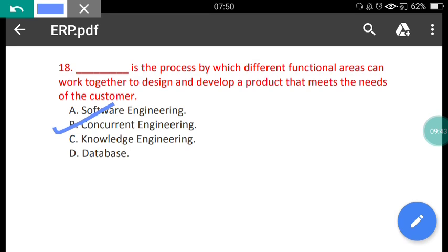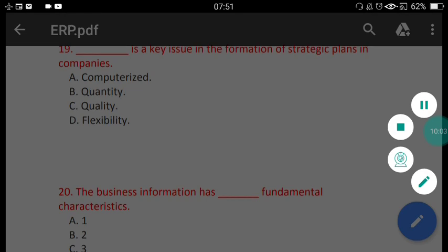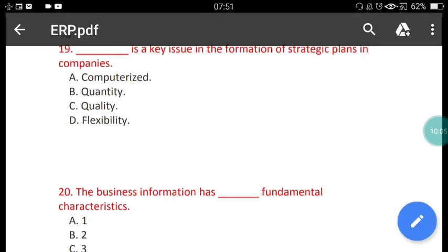Question 19: What is the key issue in the formation of strategic plans in companies? The options are: quality, quantity, and flexibility. The correct answer is option D — flexibility is the key issue in the formation of strategic plans in companies.